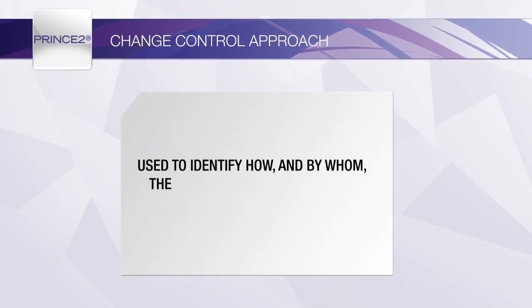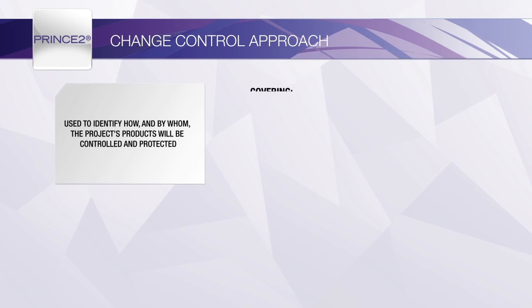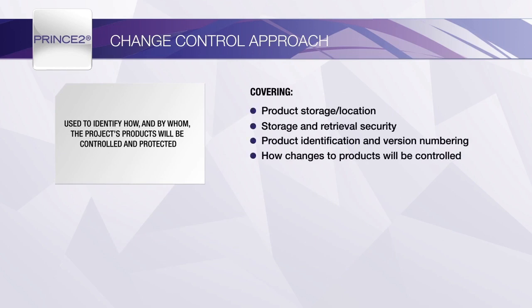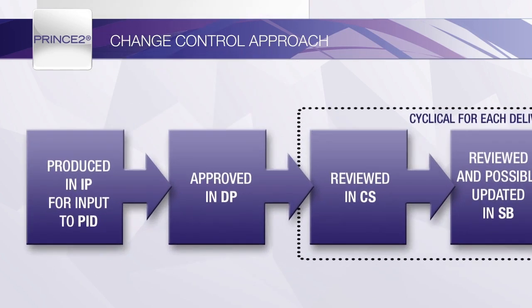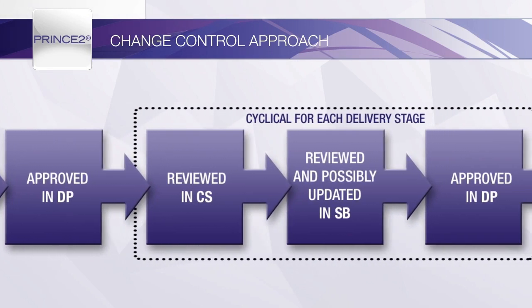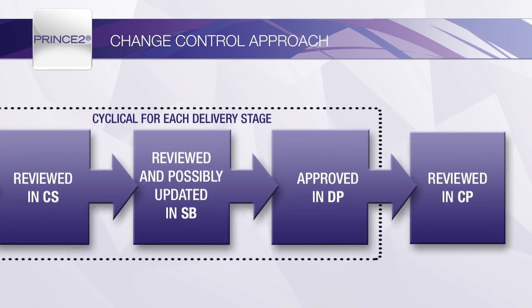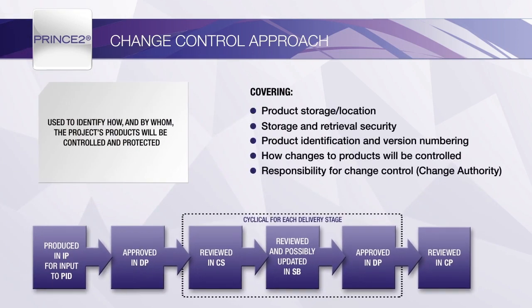The Change Control approach is created by the Project Manager during the Initiation Stage and defines the project's procedures for issue management and change control. It will also define the responsibilities for these procedures, as well as reporting mechanisms, tools and techniques. The Change Control approach forms part of the Project Initiation documentation and is therefore approved in DP by the Project Board. It is reviewed throughout the CS process when the Project Manager has issues to deal with, and will also be used when creating work packages so that the procedures can be written into these. The Project Manager will also need to refer to the procedures during the CP process when preparing for handing over products to the Operations and Maintenance teams.